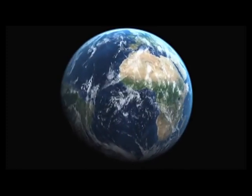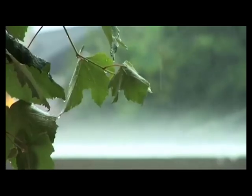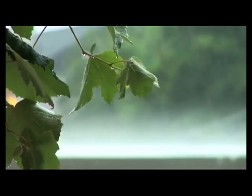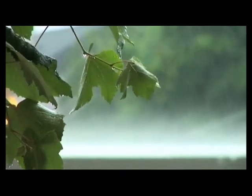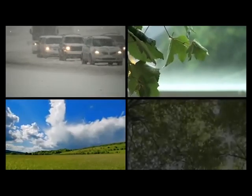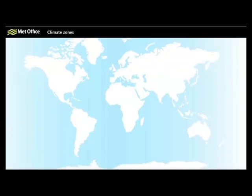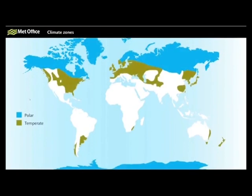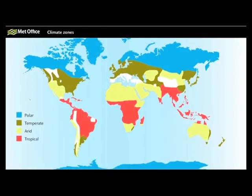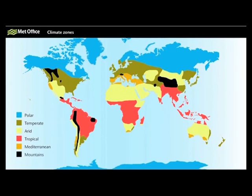Two of the most important factors that determine an area's climate are air temperature and precipitation. World biomes are controlled by climate. The climate region will determine what plants will grow there and what animals will inhabit it. All three components — climate, plants, and animals — are interwoven to create the fabric of the biome.